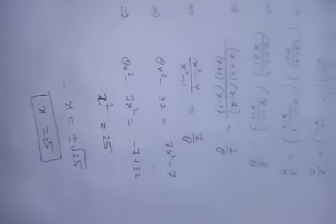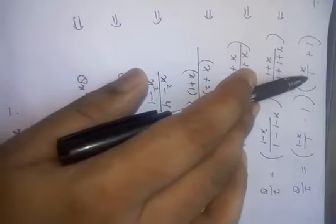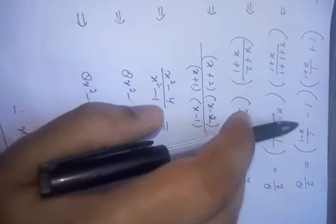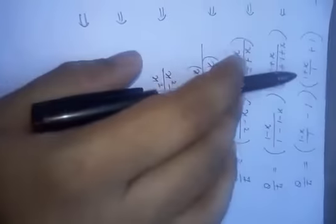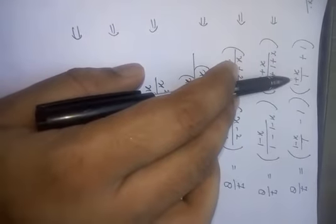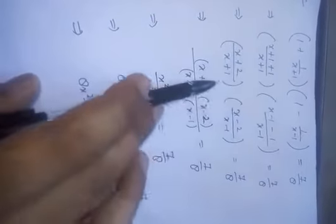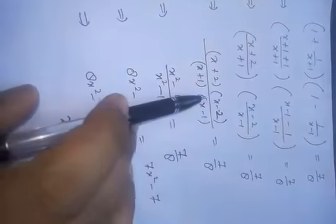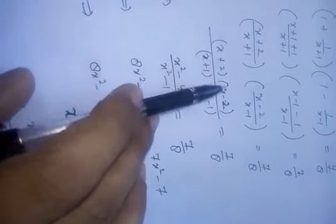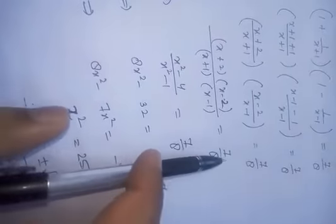The second example is: [1 + x/( x+1)] × [(x-1)/x - 1] = 7/8. First take the LCM in the first bracket and take the LCM in the second bracket. Cancel terms, and the final simplified form is (x+2)(x-2) / [(x+1)(x-1)] = 7/8.